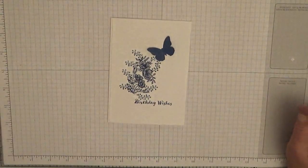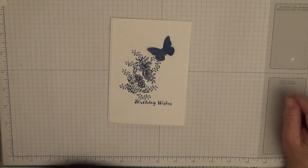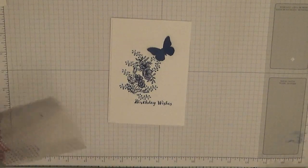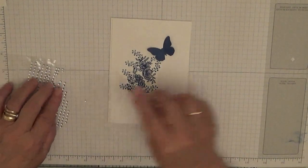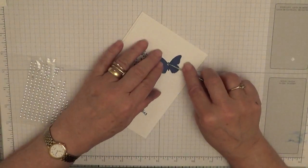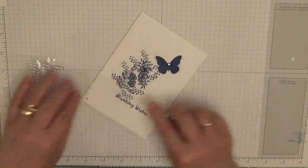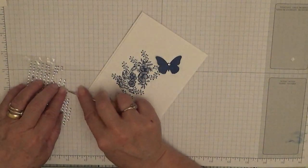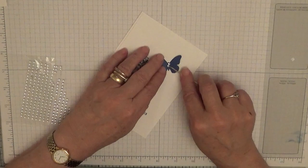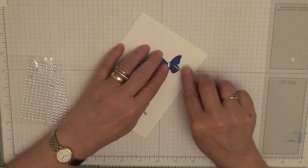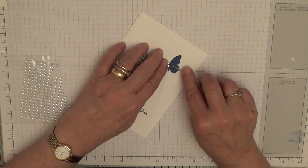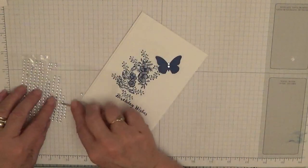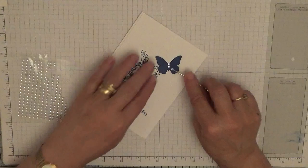And then all it leaves us to do is put some gems on the butterfly. Just three on this butterfly. On the other one I think I put gold, but this one I do silver with the blue.